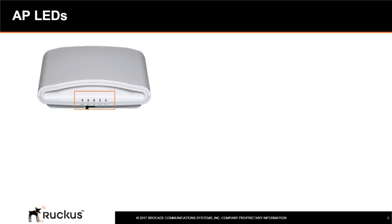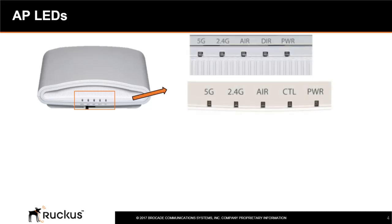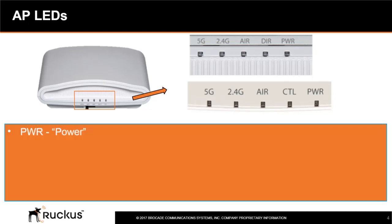The key to troubleshooting your Ruckus Cloud APs is to understand the AP's LED behavior. All Ruckus APs have five LEDs which provide status information. They are labeled from right to left: PWR, DIR or Control, AIR, 2.4G, and 5G. On the right is the PWR LED, which stands for Power.